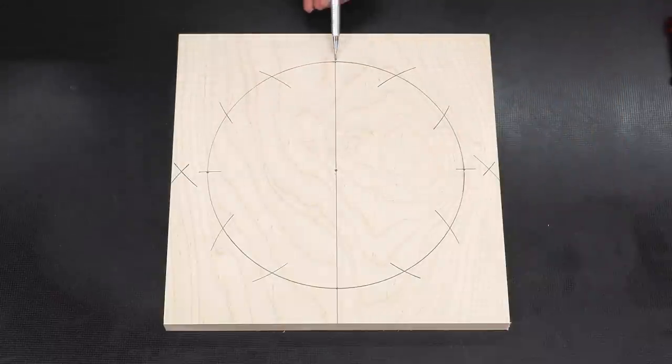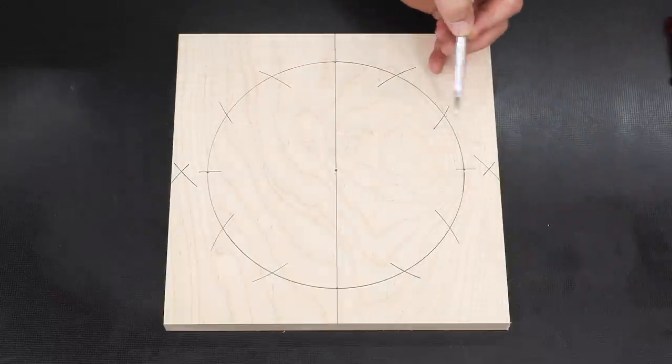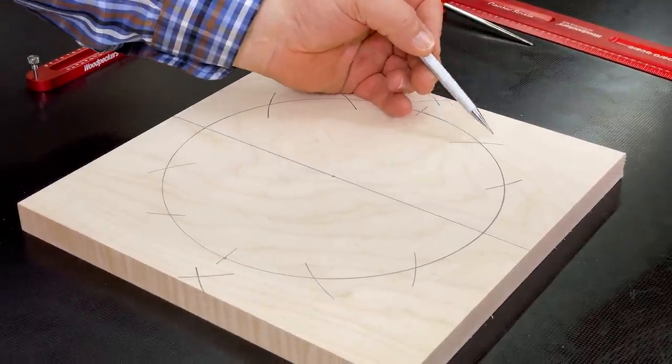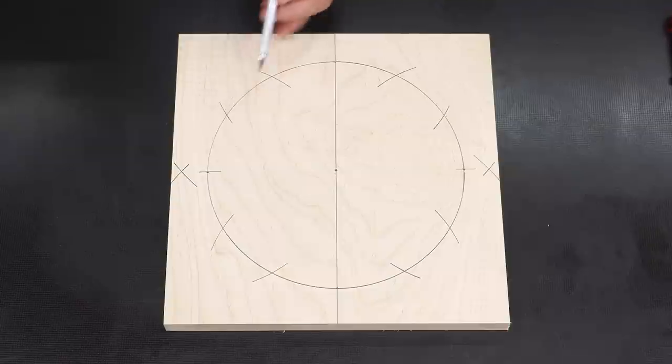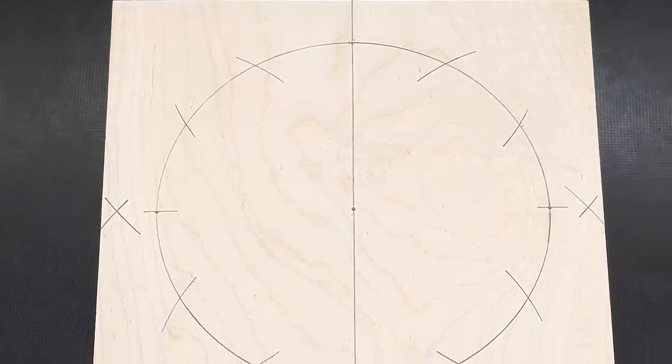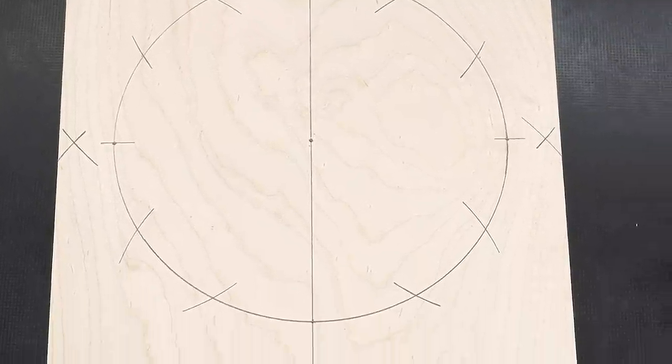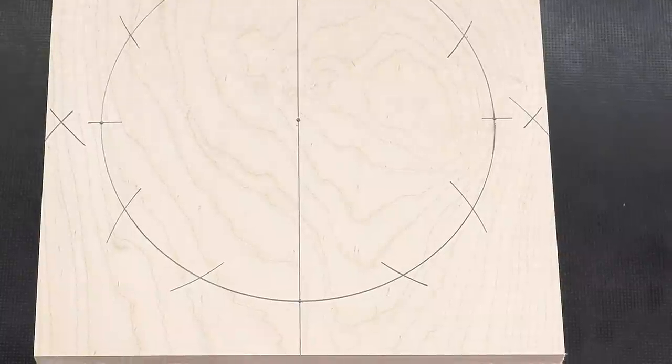All right 12, 1, 2, 3, 4, 5, 6, 7, 8, 9, 10, 11 and back to 12. Perfectly even spaced. Now we'll just use our awl, set each one of those points, go to the drill press and drill it out.